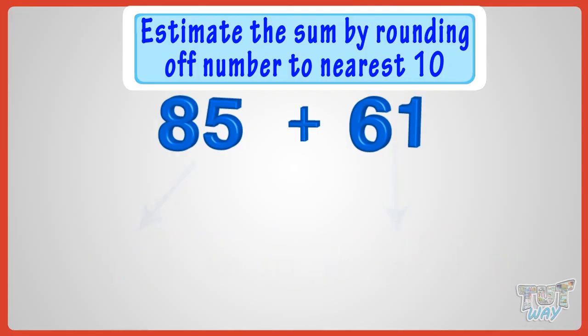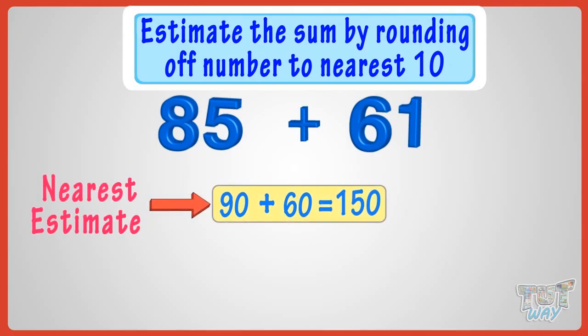Now, add the rounded off figures. 90 plus 60 equals 150. Now, let's compare the estimate with the actual answer. 85 plus 61 equals 146.